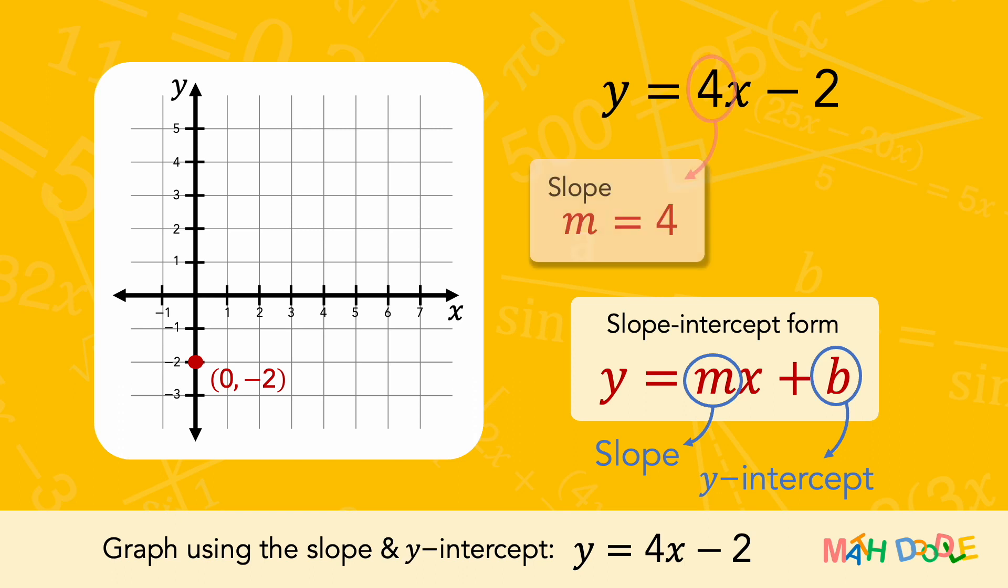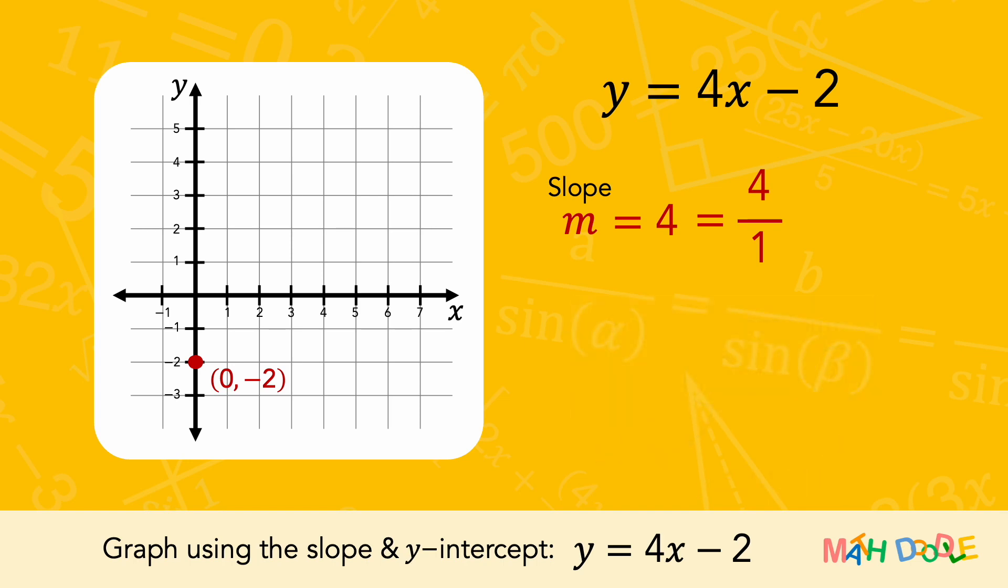The equation has a slope of 4, which we can rewrite as a fraction. Since the slope of a line is expressed as the ratio of the rise to the run, this tells us that the line has a rise of 4 and a run of 1.